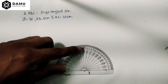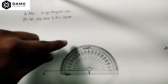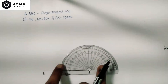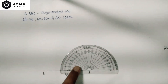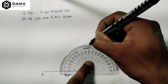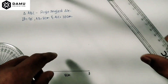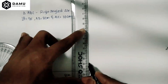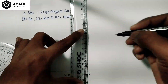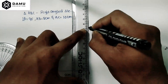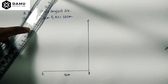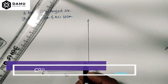Take a protractor and measure the angle at B with 90 degrees. Coincide the left side line with the protractor base line, and from the left side measure 90 degrees. Draw one ray from B at 90 degrees.